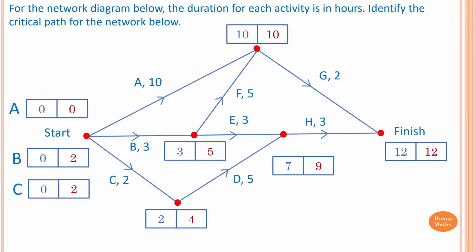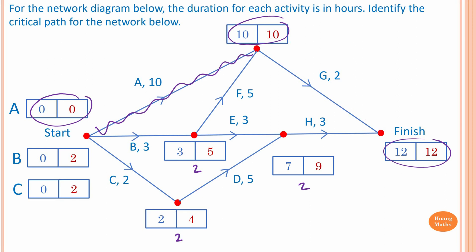Please stop the video and try this one yourself. To identify the critical path for this project: the float time for the first activity is 0, so that path is critical. The float time for the other paths is 2 hours each, so they are not critical. The next critical activity is G, so the critical path is A to G, and the shortest time to complete the project is 10 plus 2, which equals 12 hours.